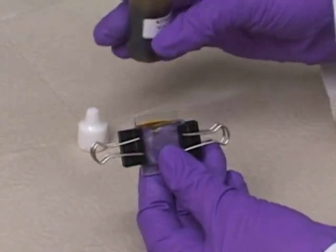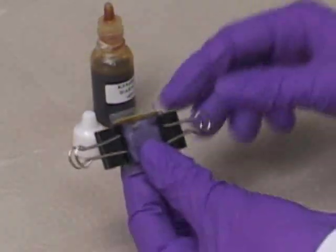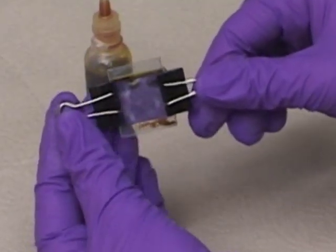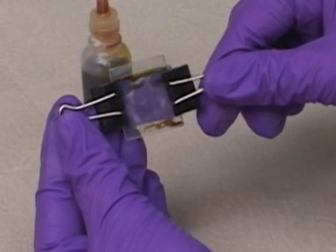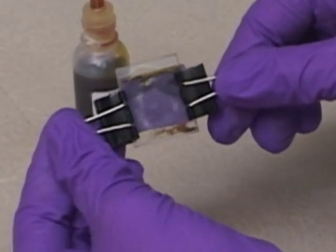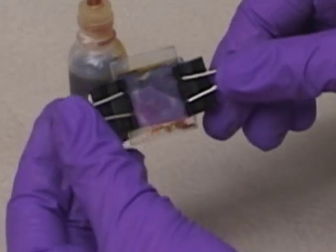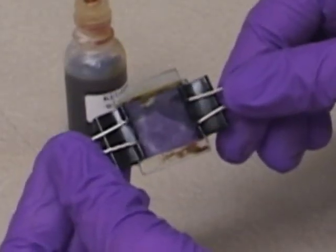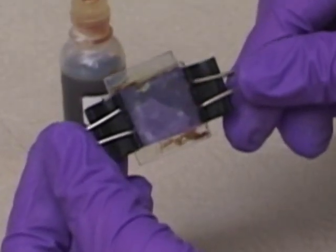Step 6. Alternately open and close each side of the solar cell by releasing and returning the binder clips. The liquid is drawn into the space between the electrodes by capillary action. This wets the stained titanium dioxide film. Make sure that all of the stained area is contacted by the electrolyte.